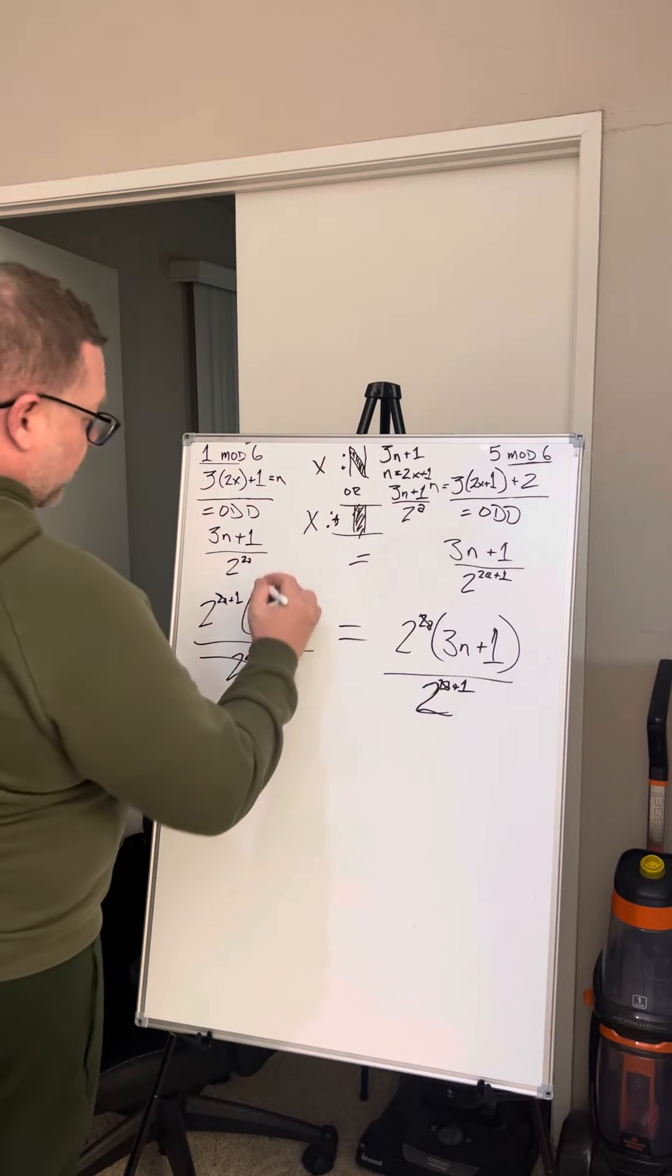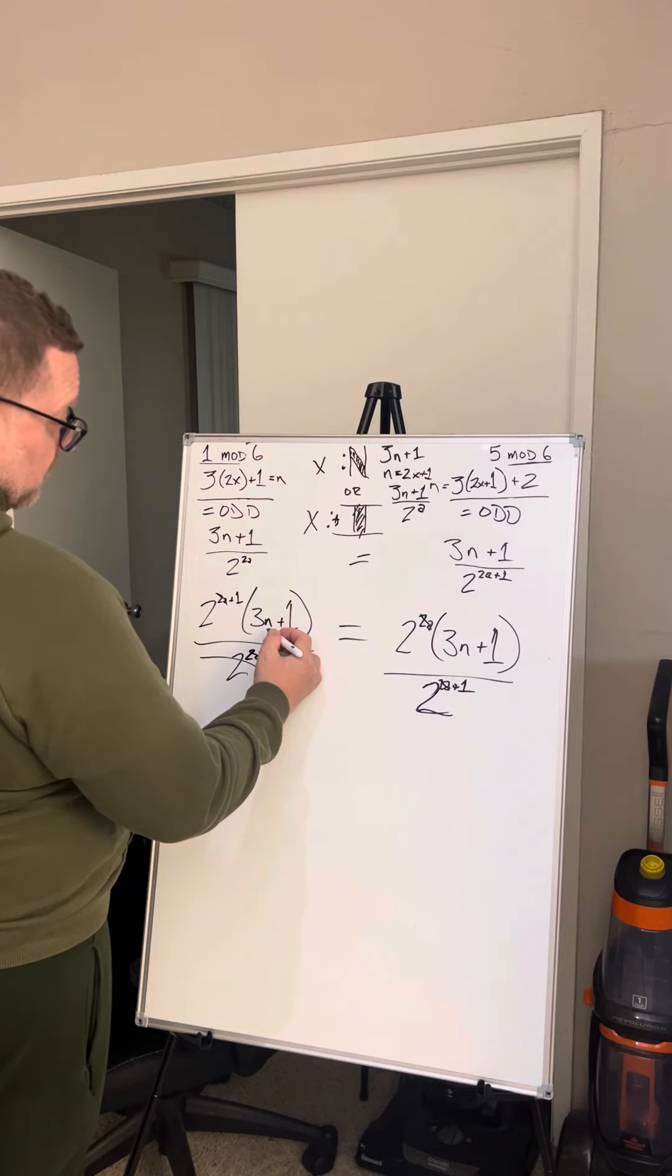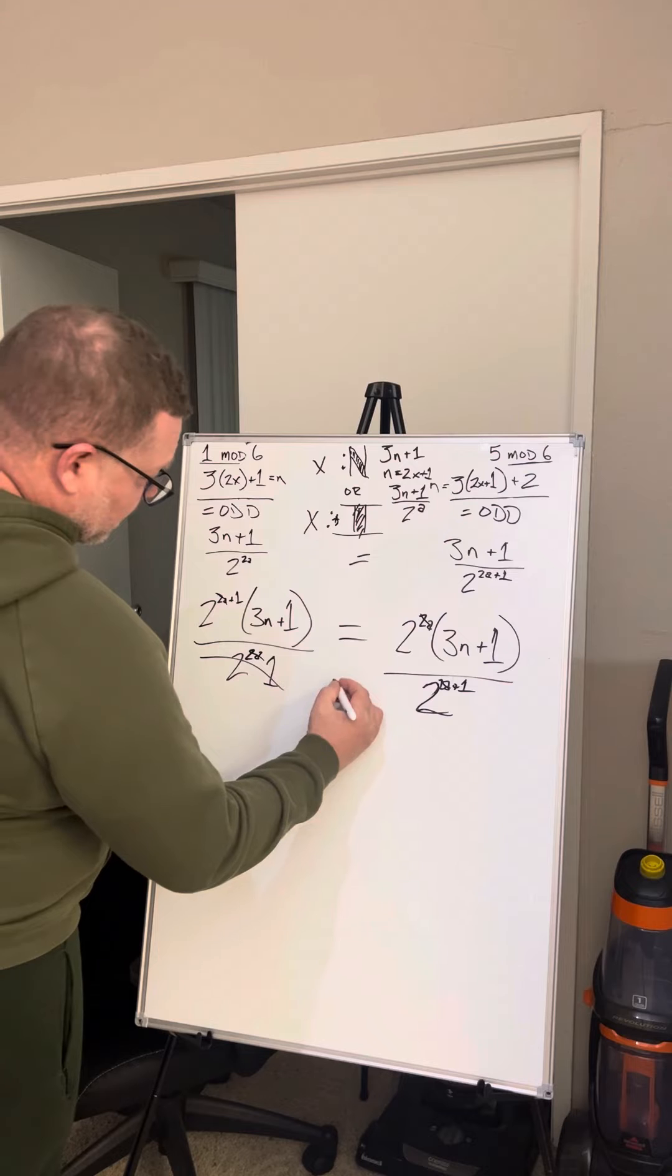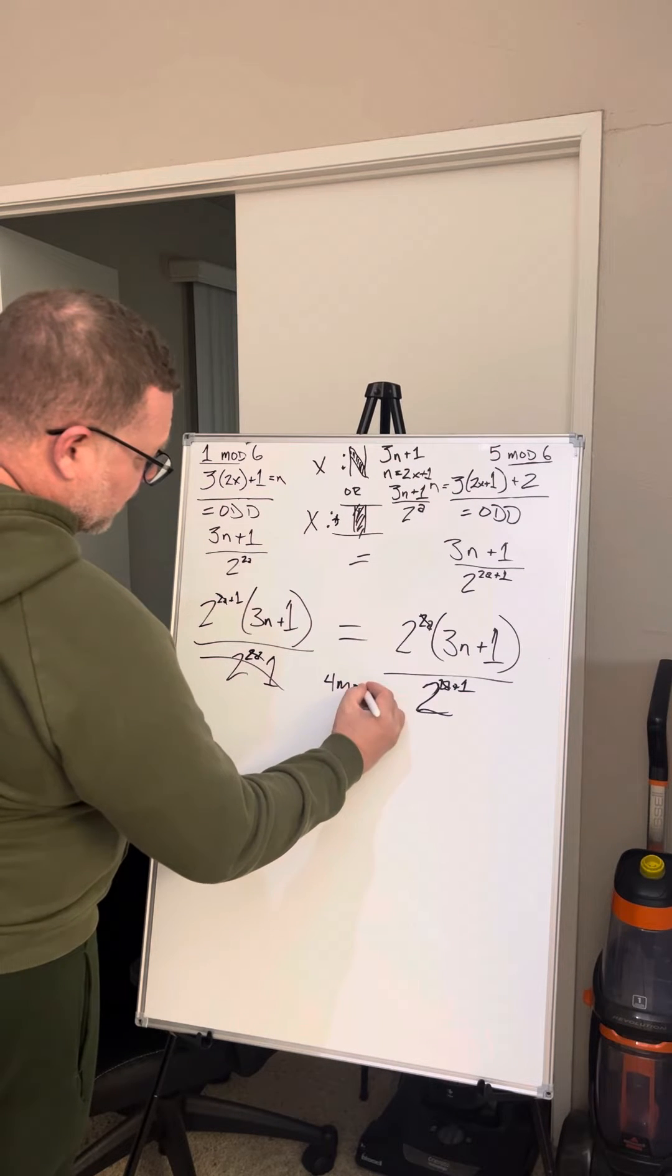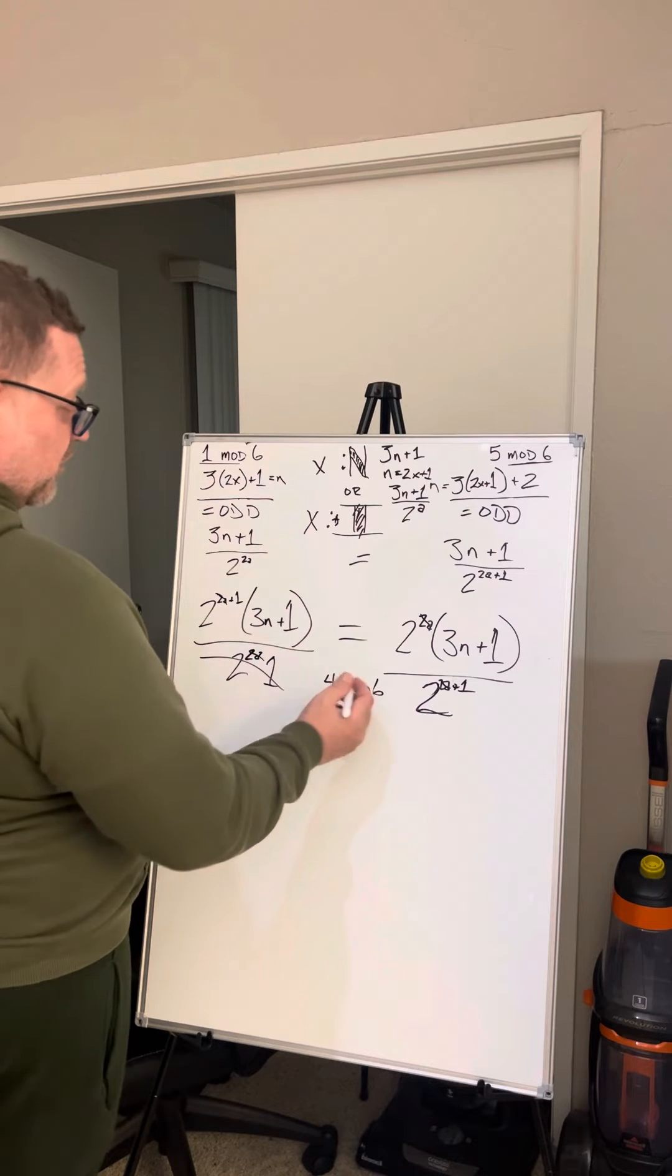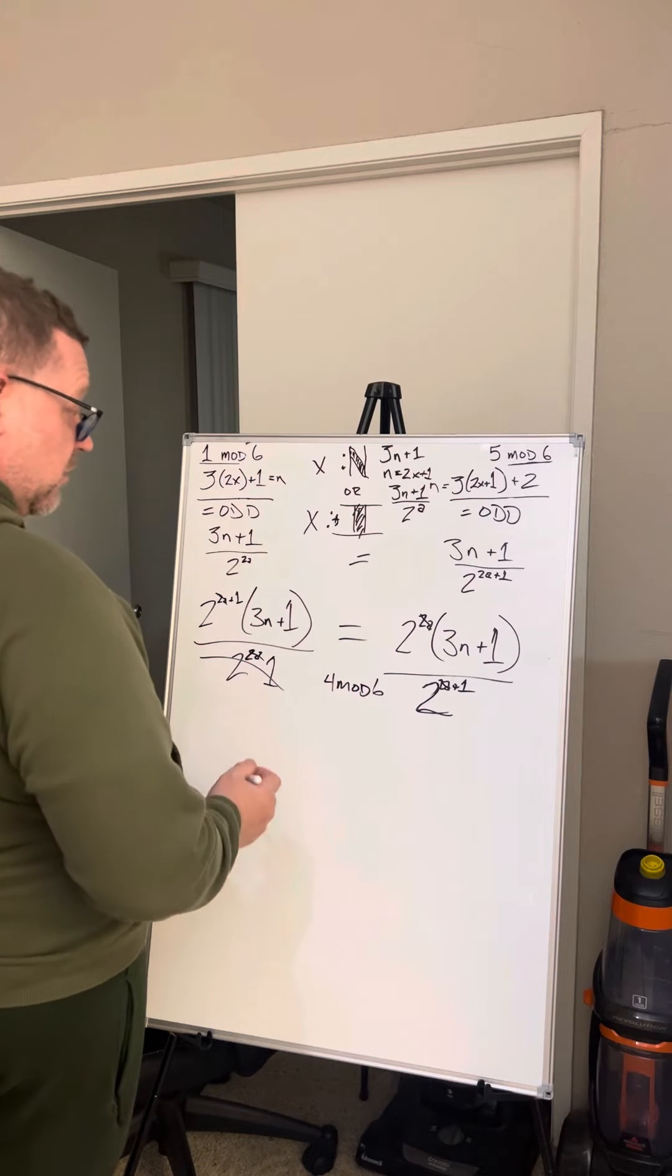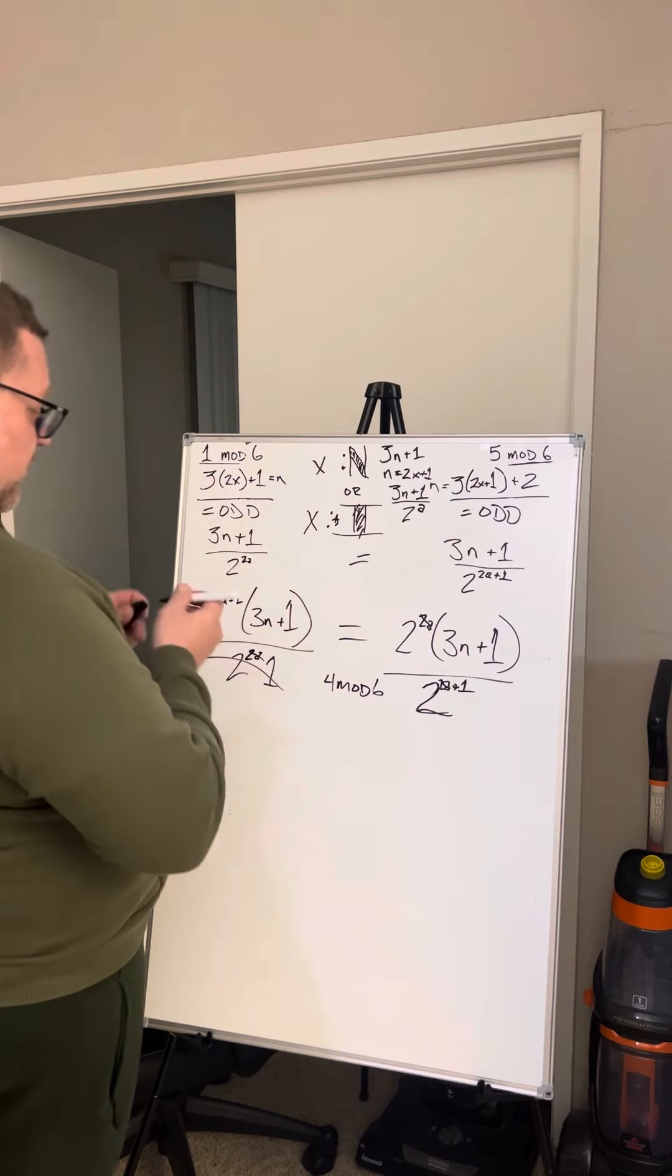And since every 3n plus 1 where n is an odd number is the same as 4 mod 6, 3 times an odd number plus 1 same as 4 mod 6, from the previous one, then that's always going to be true.